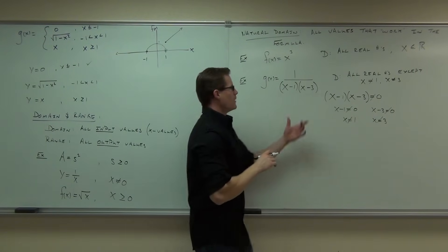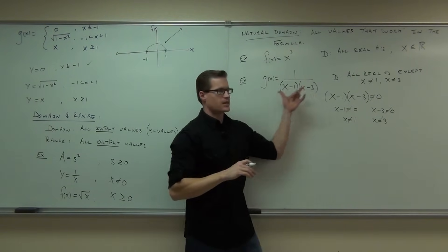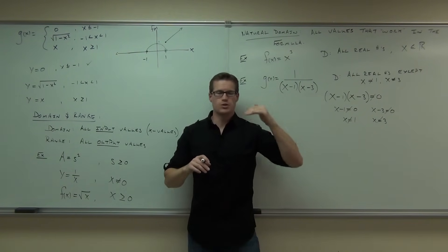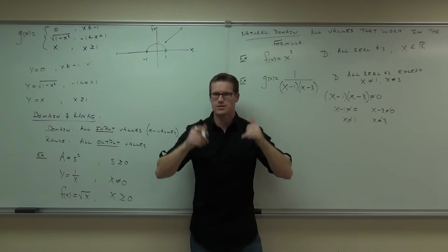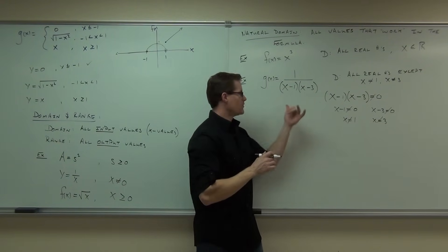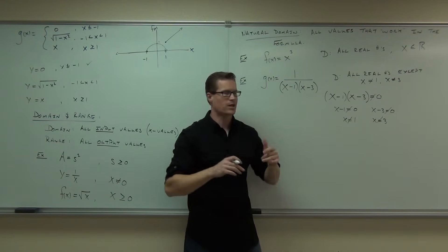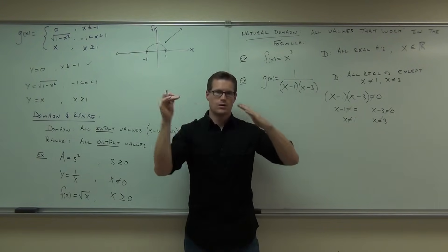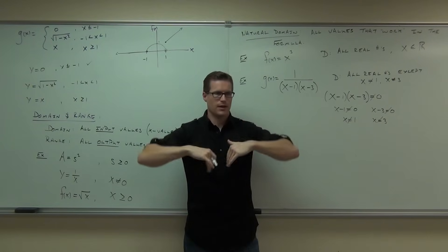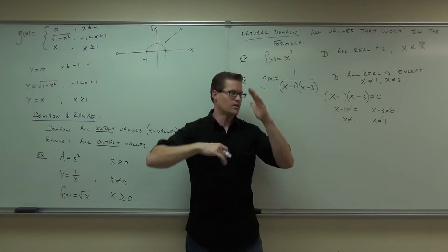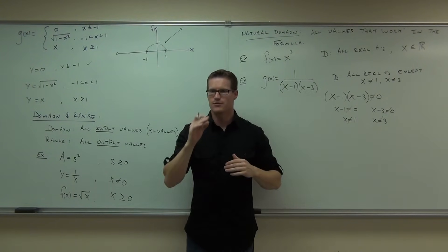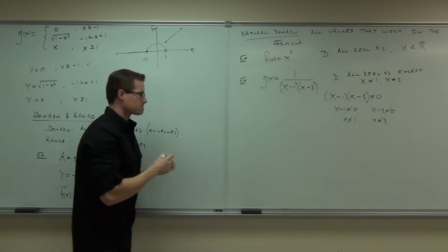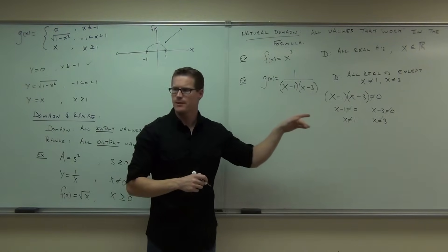Later in the class, you'll find that if you cannot simplify those problem values out of your function, they'll be vertical asymptotes — the function goes to positive or negative infinity at those points. If x = 1 and x = 3 can't be simplified away, those are vertical asymptotes.